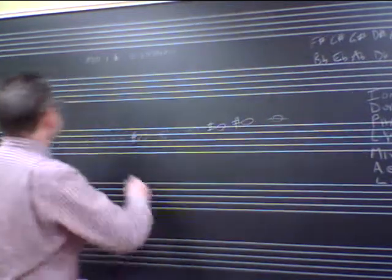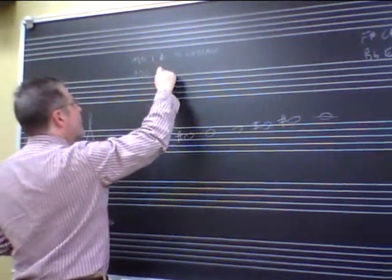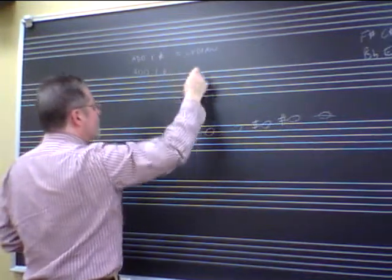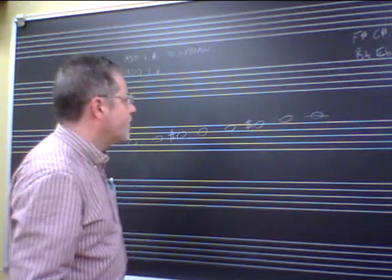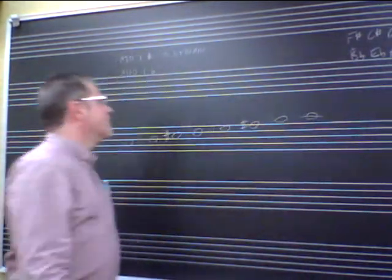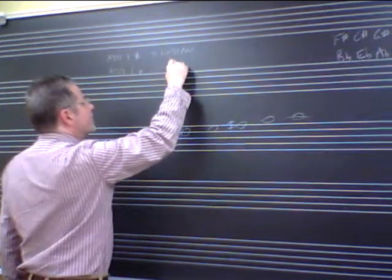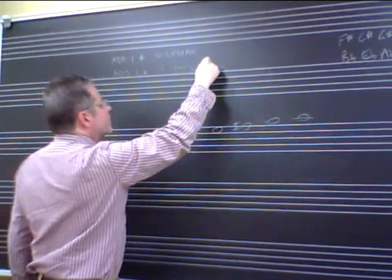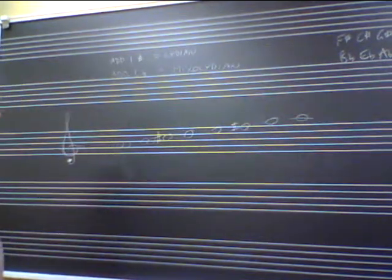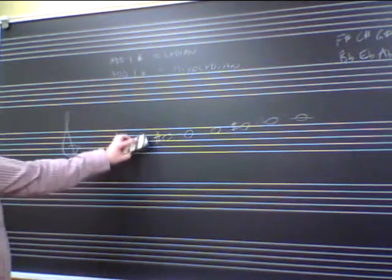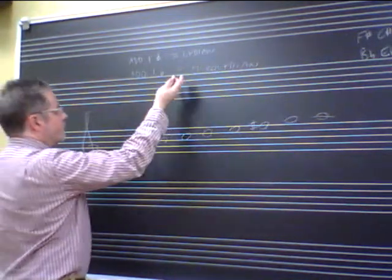If we take away that sharp—so we subtract a sharp, or add one flat, or subtract a sharp—then that's going to take away this here. So we'll have just F-sharp and C-sharp, and this gives us Mixolydian.